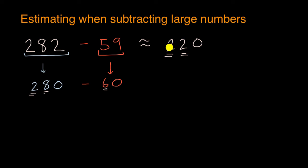So the whole point here, this is actually not exactly what 282 minus 59 is. But if you just said, hey, ballpark, I want to know roughly how many jelly beans do I have? Well, this could be useful.